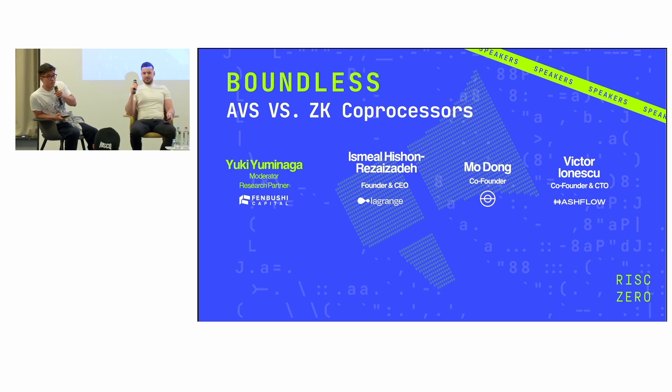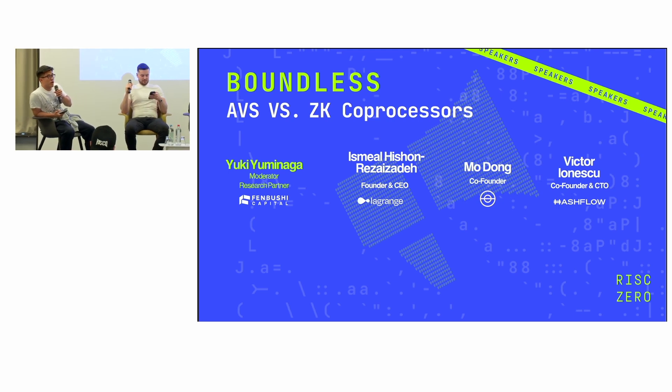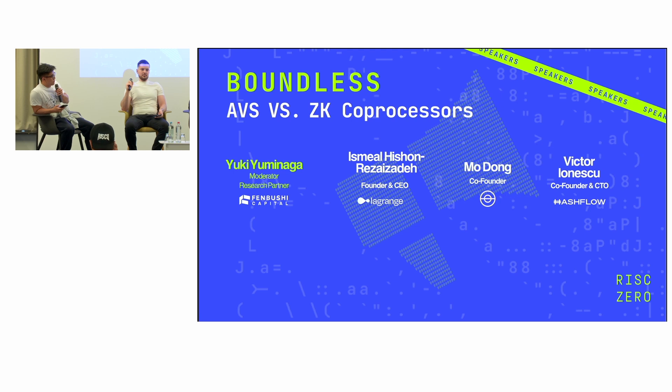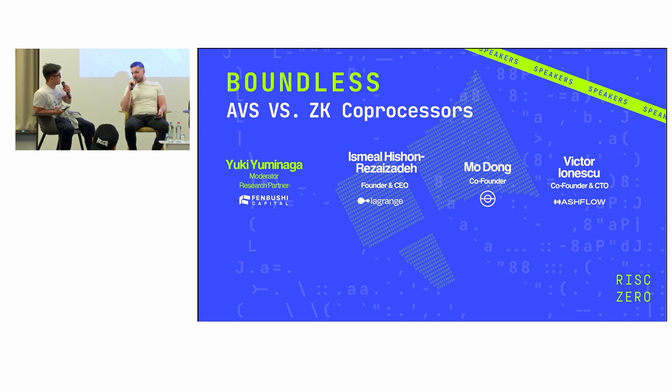As you see, the topic of conversation today is AVS versus ZK coprocessor. All of you guys use AVS to some point, right? Victor, you don't use AVS yet. So for Mo and Ismael, a question I have for you is: why AVS for coprocessing over ZK and vice versa? Can you make the case for ZK versus AVS and some of the decision behind the usage of those?